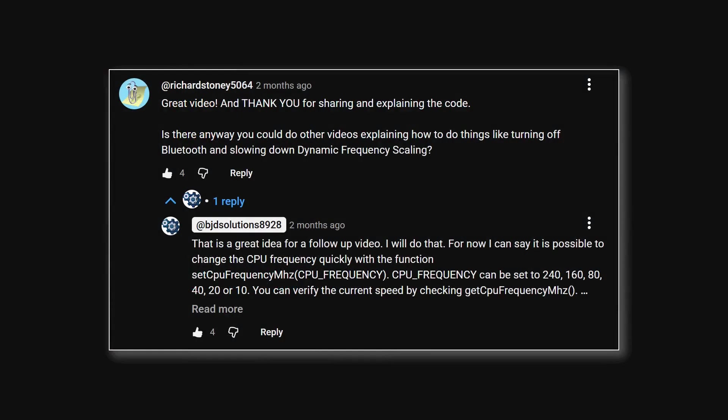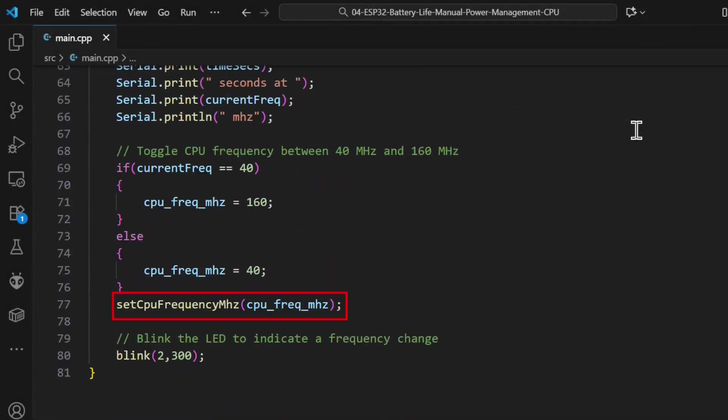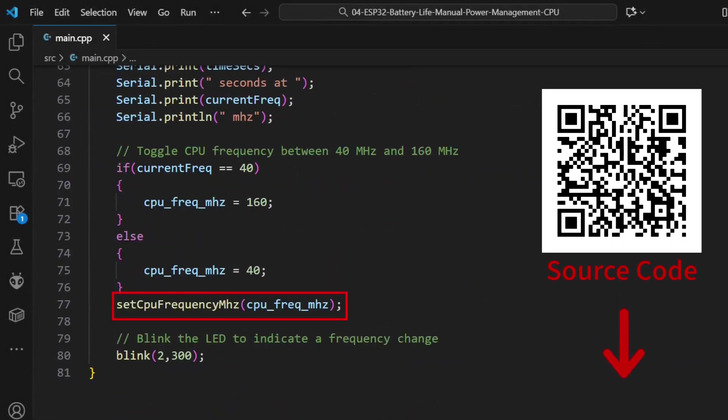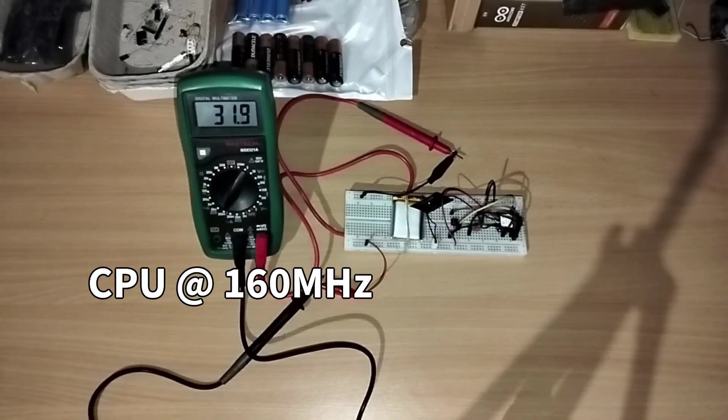Okay this next one is really cool. What if you could tell your ESP32's brain to just slow down? Your ESP32 doesn't always need to run at full speed. For simple tasks we can manually lower the CPU frequency to save a ton of power. Using the set CPU frequency megahertz function we can easily switch between say 160 megahertz for heavy lifting and 40 megahertz for just cruising. You can see the difference right there. Slower speed means lower power draw.